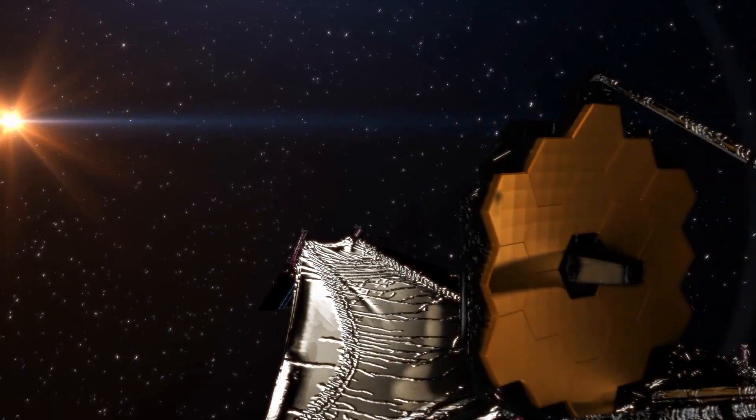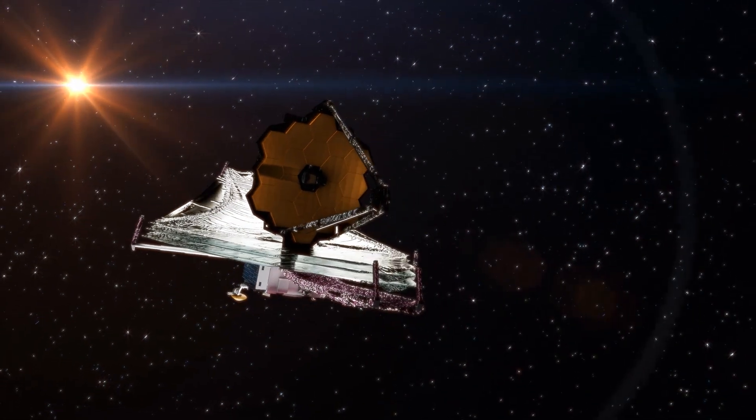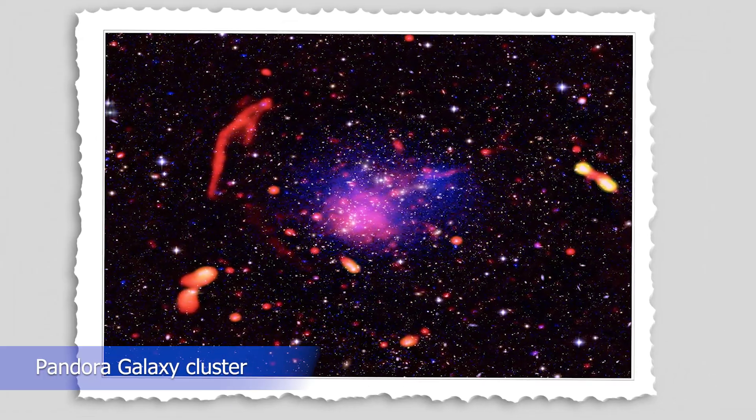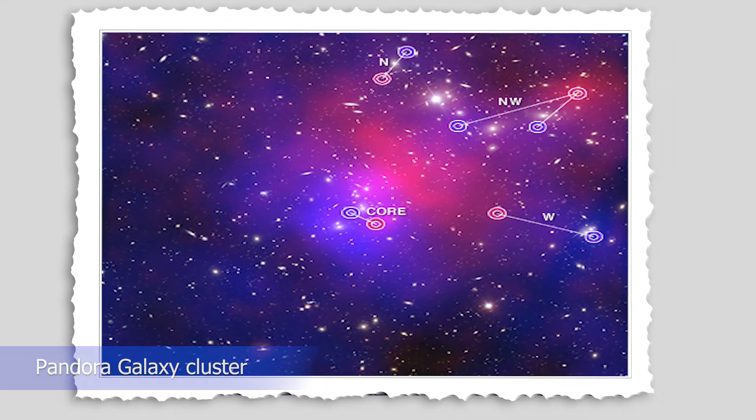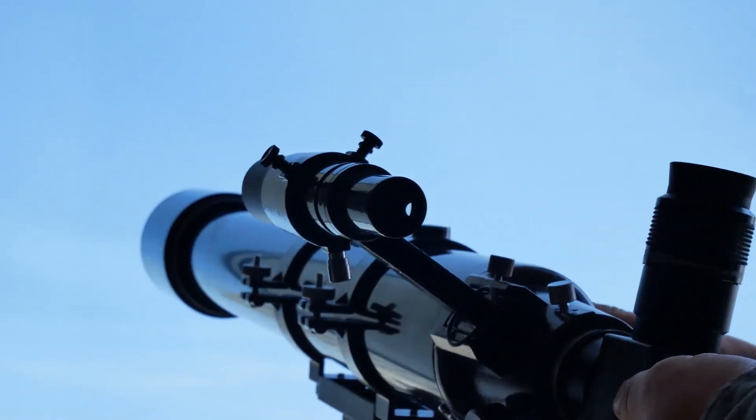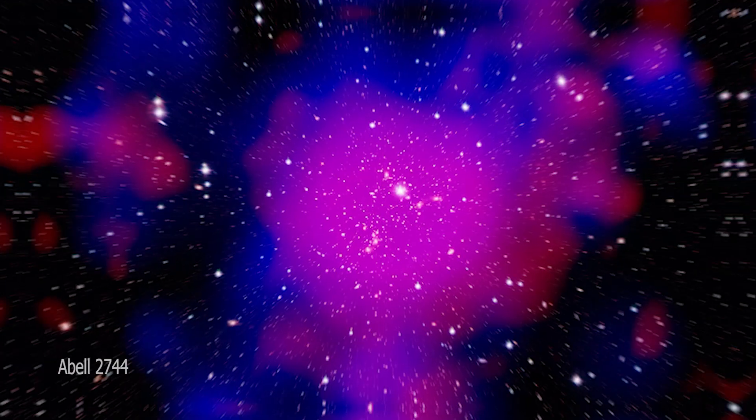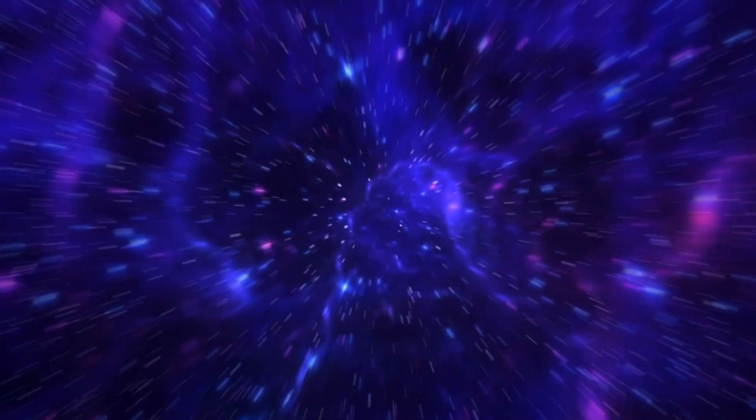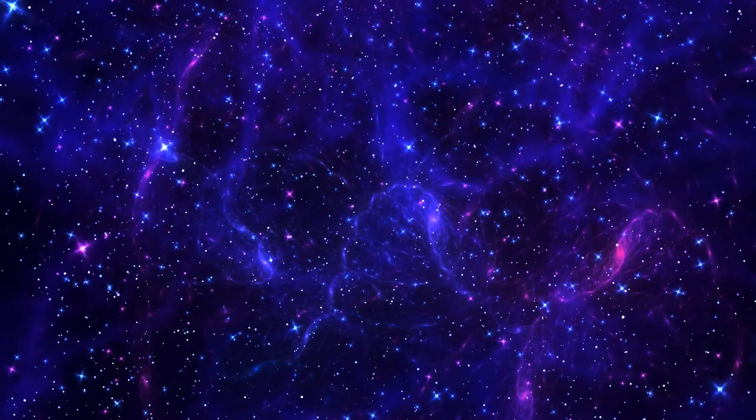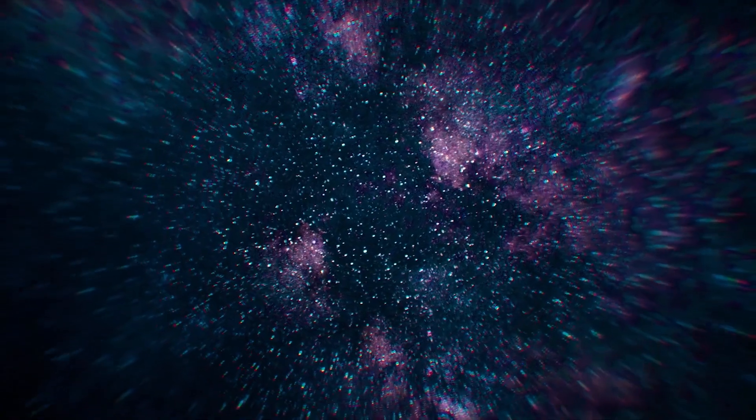The James Webb Telescope has discovered two amazing galaxies in the Pandora Galaxy Cluster that are so far away that they can only be seen through gravitational lensing. Actually situated in the galaxy cluster Abel 2744, some 3.5 billion light-years from Earth, are these two galaxies.